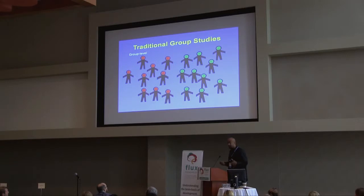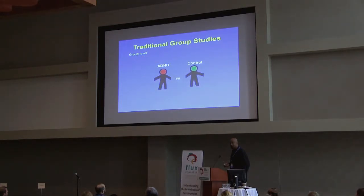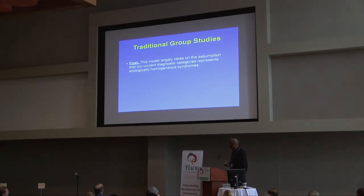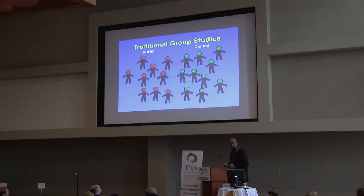Can this information help us tailor earlier interventions and future therapeutics to improve health outcomes for a given individual? When we typically begin to answer these questions — and our lab is no different — we often start at the group level, where we take one group defined by some external features and compare it to another to identify what's different. We study ADHD among other things, and so typically we use the DSM or some other diagnostic criteria to define our particular groups.